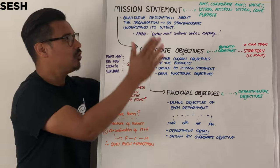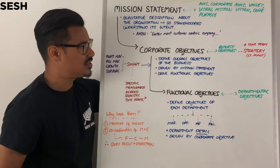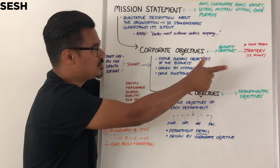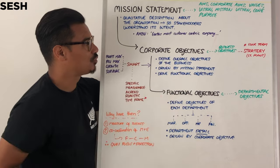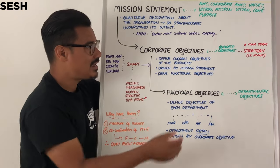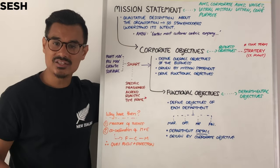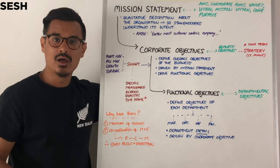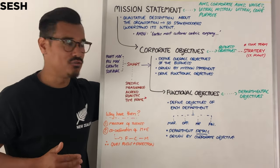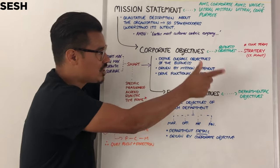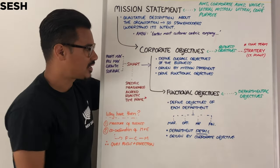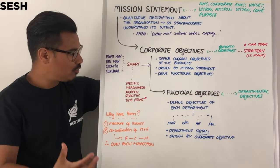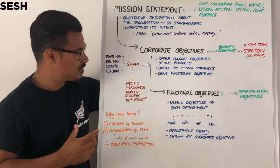In the longer term, the word 'strategy' is sometimes interchangeably used with business objectives and corporate objectives. When it is — which tends to be in the later units of your A-level — strategy is essentially long-term objectives and how you can strategise for the future.